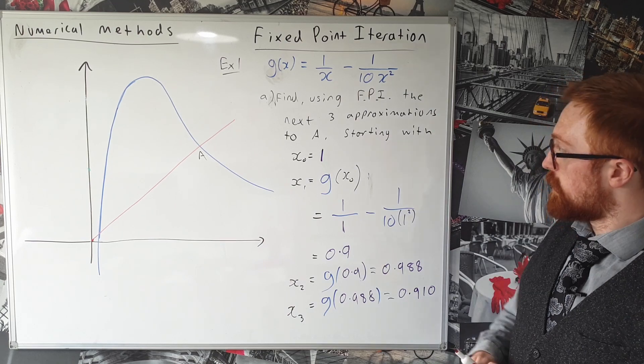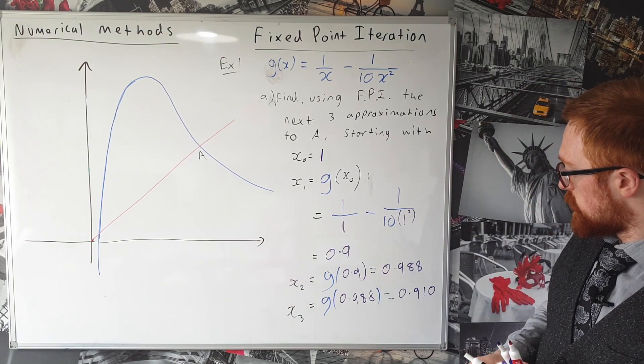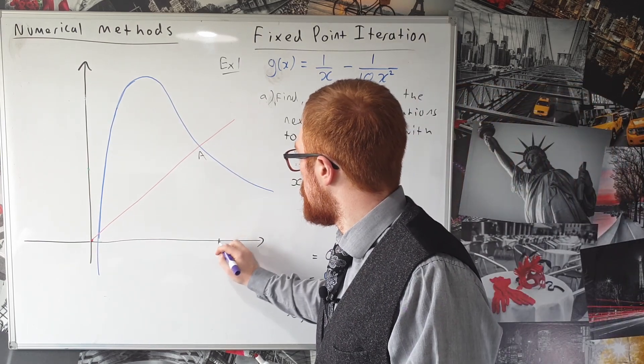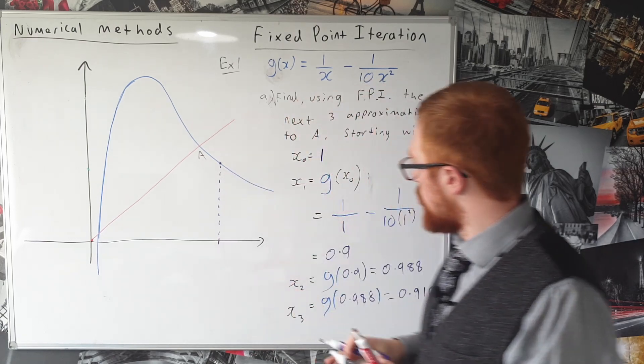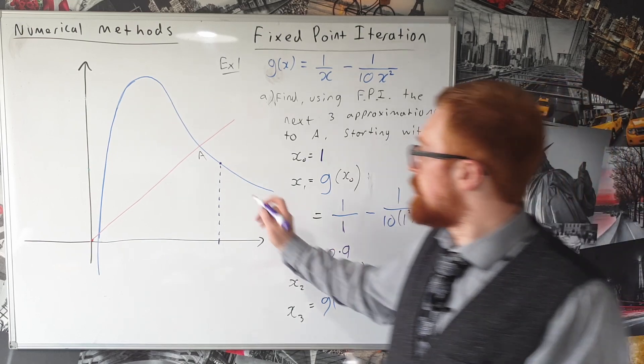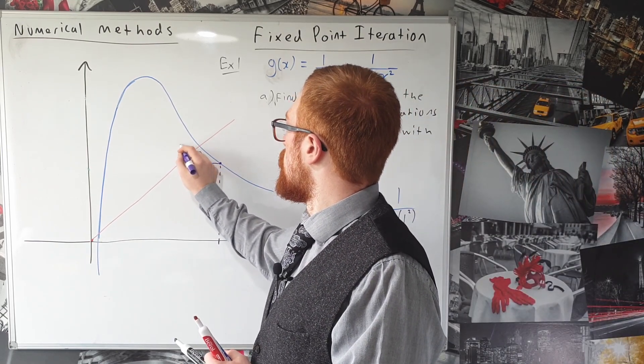Okay so let's have a quick look at what that looks like on our diagram. And so if we start with x_0 equal to 1 we're going to start about here and that goes up to this point here. And then our next approximation is 0.9 so we're going to jump across to here and then go up.